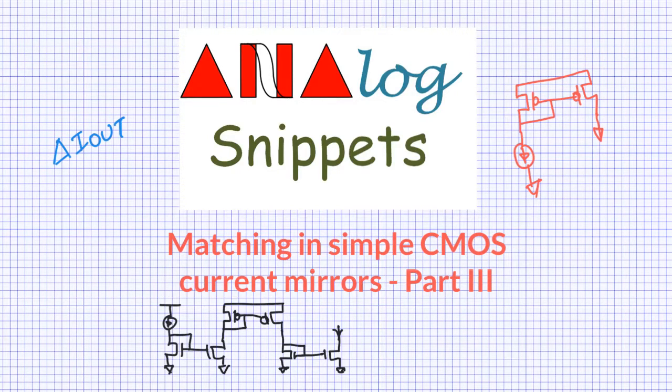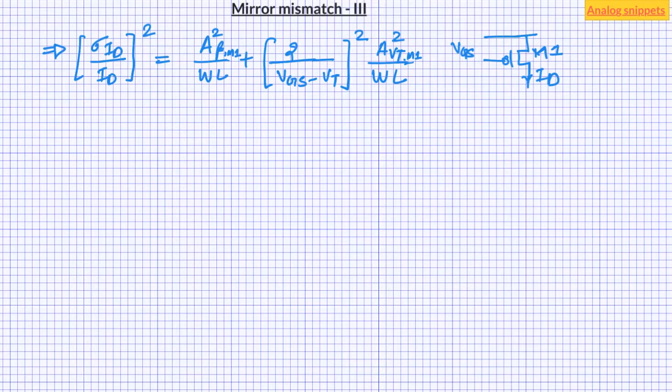Hello, this is the third and probably the final part of matching properties of simple CMOS current mirrors. In the first part of the video, we saw that the variation in drain current is a function of variation in current factor beta and variation in threshold voltage.